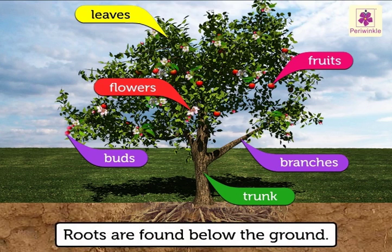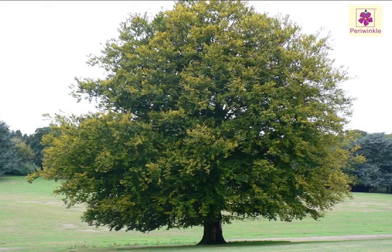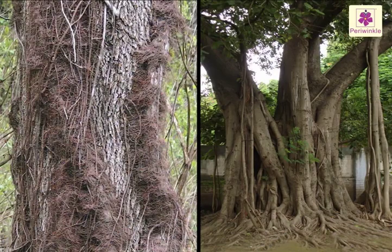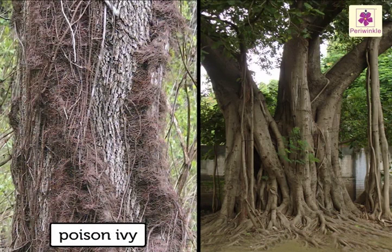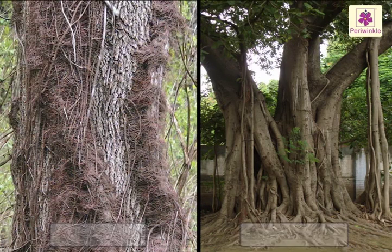Roots are found below the ground. They hold the plant in place and take in water from the soil to keep it alive. They are not seen but are most important. Some plants like the poison ivy and banyan tree have roots that can be seen above the ground.